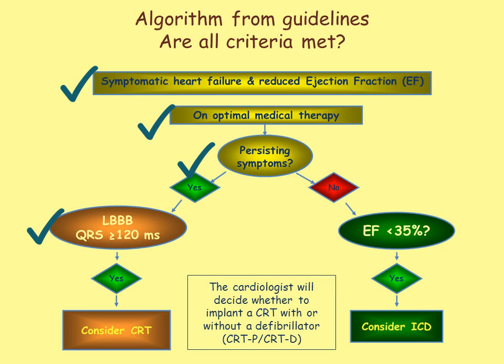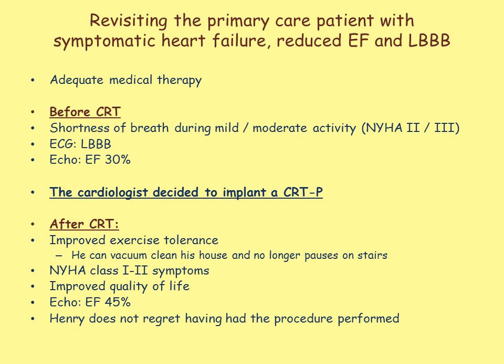The decision of whether or not to implant a CRT should consider the patient's biological age and extent of comorbidity. The cardiologist decided to implant a CRTP in this case; an ICD component was not considered necessary. Following an uncomplicated implantation, the patient reported noticeably improved exercise tolerance with definite improvement in his dyspnea. An echo demonstrated a significant improvement in his ejection fraction. Importantly, Henry feels better — he can walk up the stairs without pausing and does not regret having had the procedure performed.